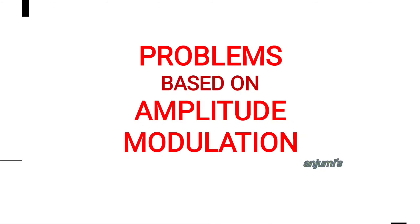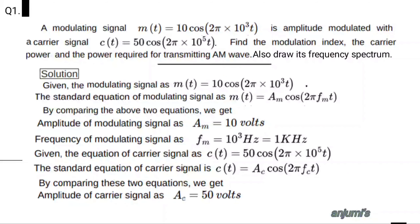Welcome. In this video, we are going to see problems based on amplitude modulation. First problem: a modulating signal M(t) = 10 cos(2π × 10³t) is amplitude modulated with a carrier signal C(t) = 50 cos(2π × 10⁵t). Find the modulation index, carrier power, and the power required for transmitting the AM wave, and also draw its frequency spectrum.